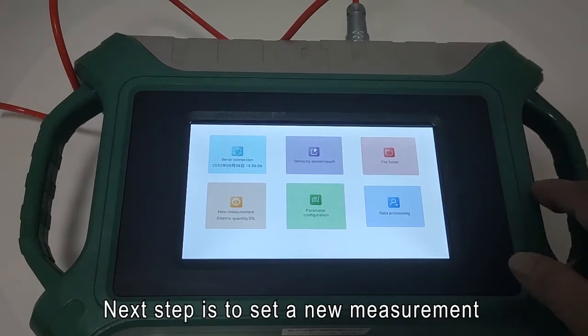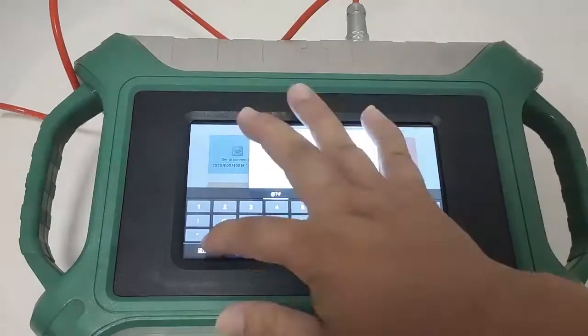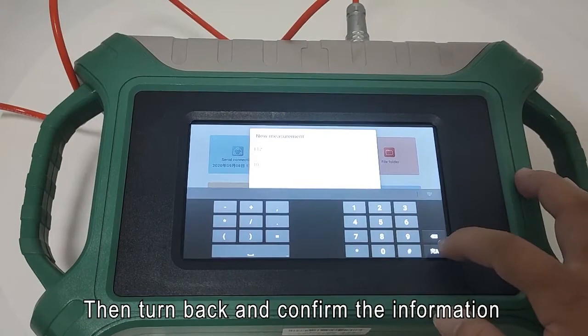Next step is to set a new measurement. Input a number you like to name the measurement file, like 112. Then turn back and confirm the information.